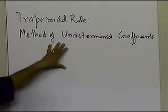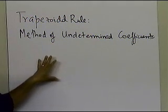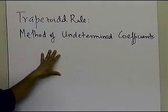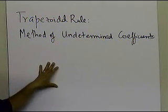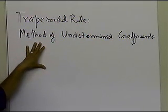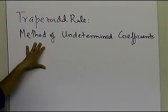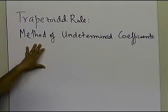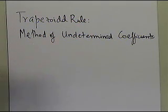This is still the trapezoidal rule — please don't confuse what I'm going to show you in this segment with the Gauss quadrature rule. But it forms a basis for why and how we derive the Gauss quadrature rule, what the motivation behind it is, and how we go about doing so.